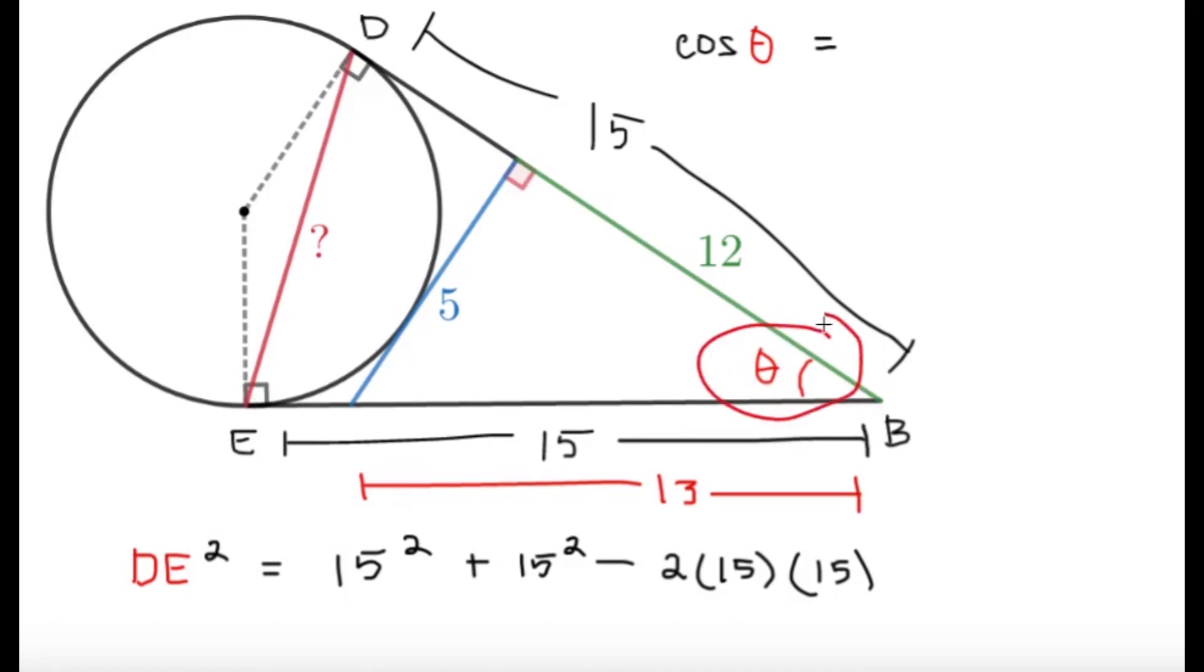And getting cosine theta is not that difficult because we have a right triangle here, and it's a 5, 12, 13 triangle, and the cosine of theta adjacent over the hypotenuse of 13, so it's going to be 12 over 13.